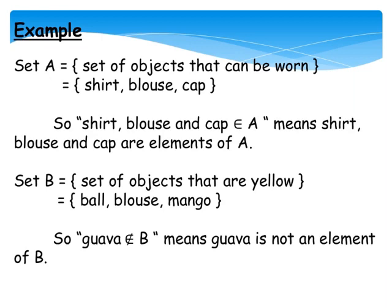Set B: Set of objects that are yellow equals ball, blouse, mango. So guava ∉ B means guava is not an element of B. Ball, blouse, and mango are elements of set B.